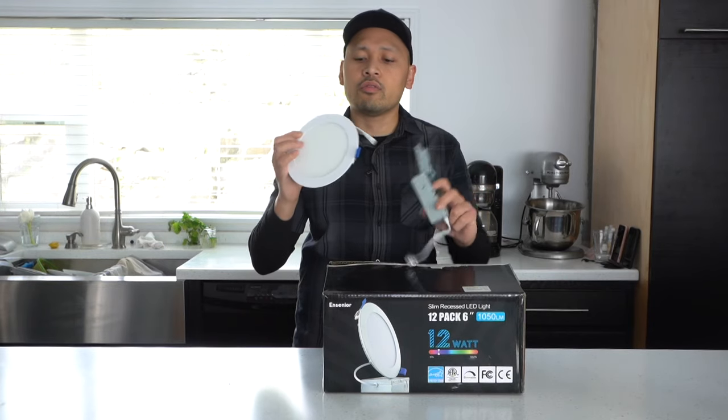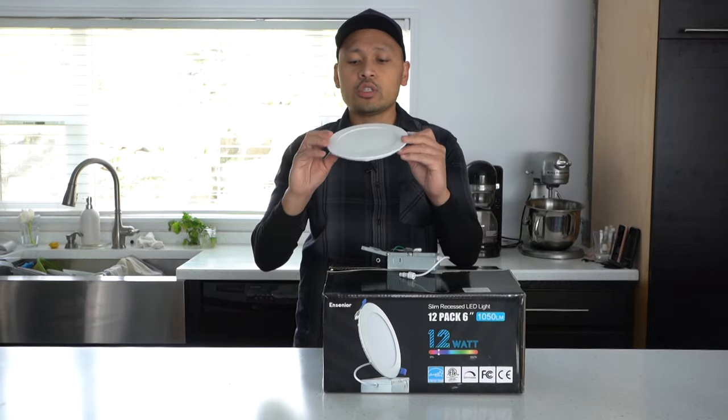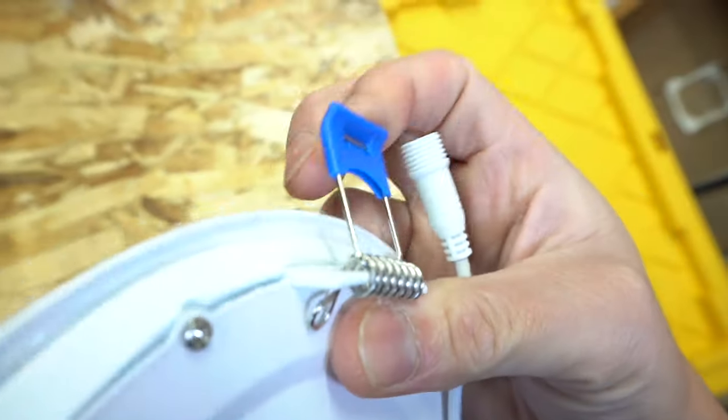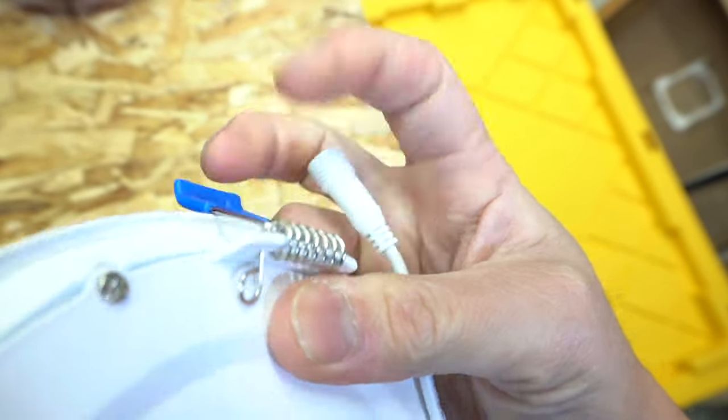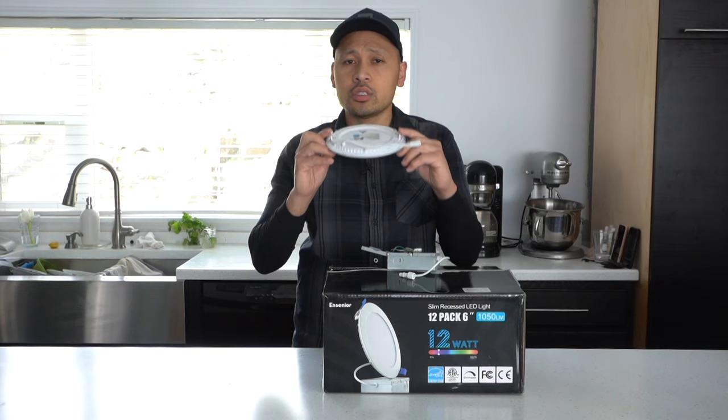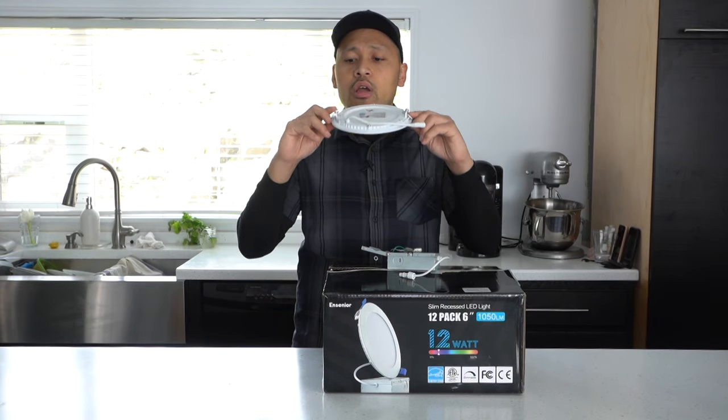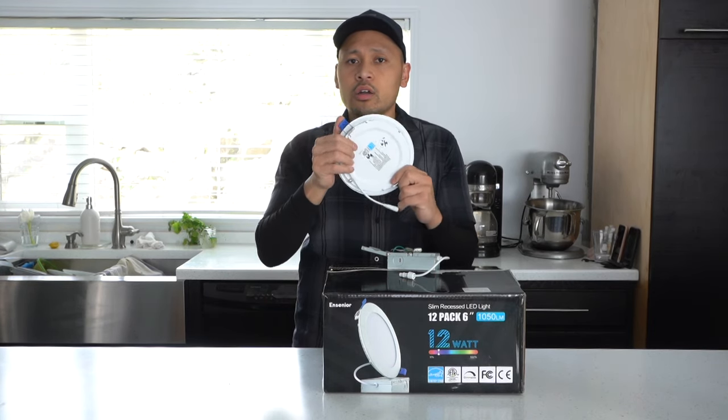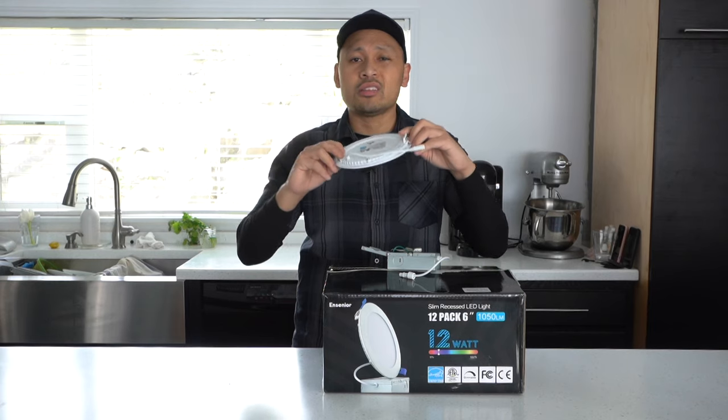Now these have very special clips on them. I highly suggest that you always find these pot lights with the very strong clips because these will determine whether these pot lights will sit flush on your ceiling, nice and flush.